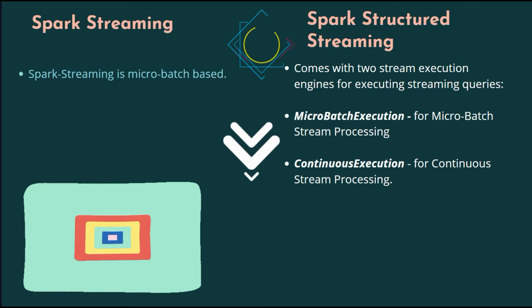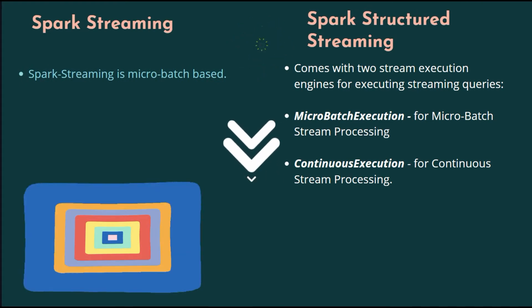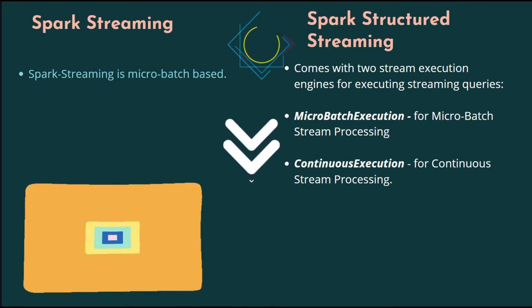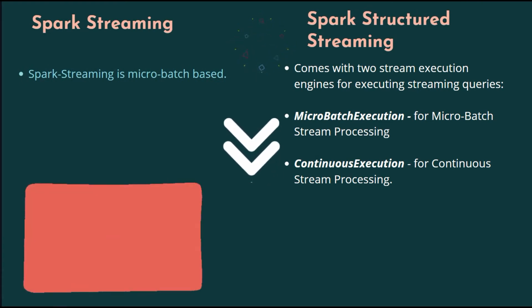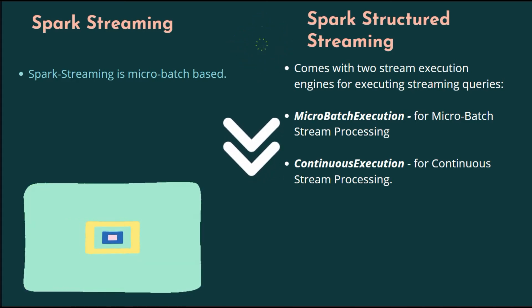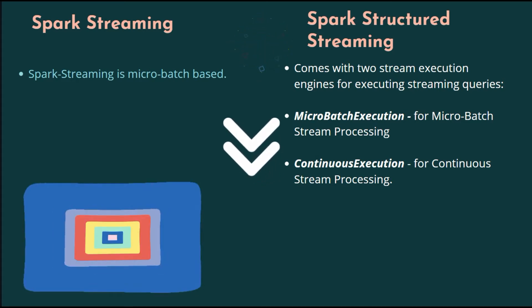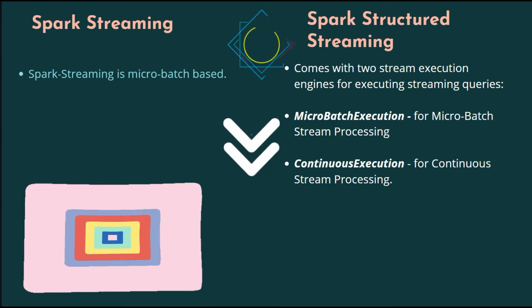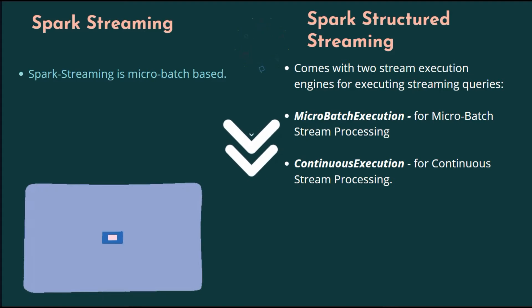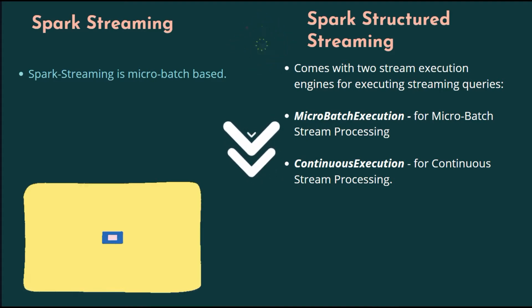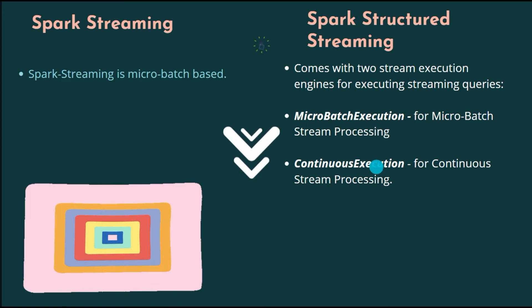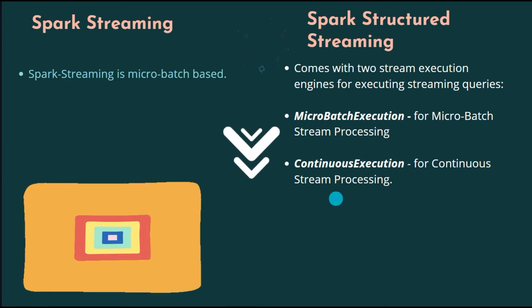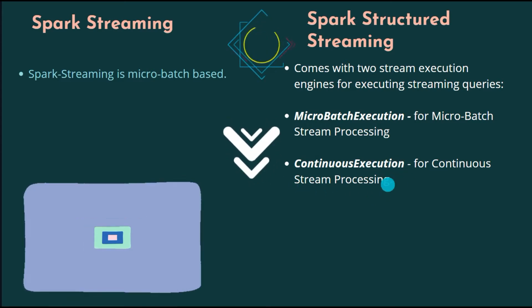Spark Streaming is micro-batch based, whereas Spark Structured Streaming comes with two stream execution engines for executing streaming queries: micro-batch execution for micro-batch stream processing, and continuous execution for continuous stream processing.